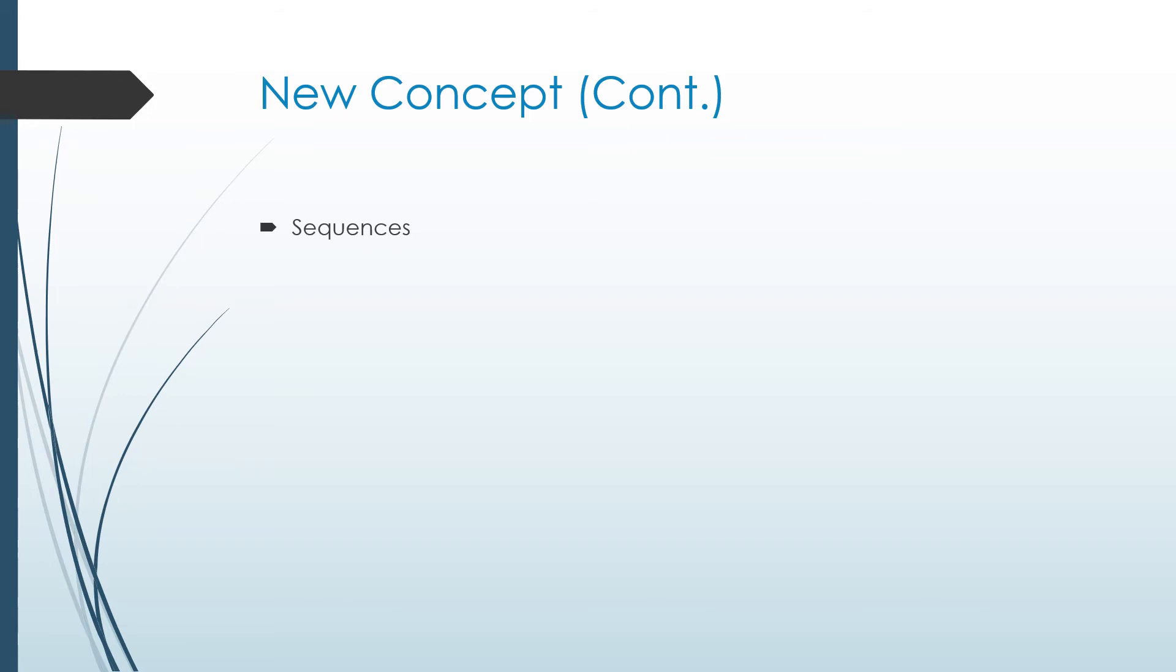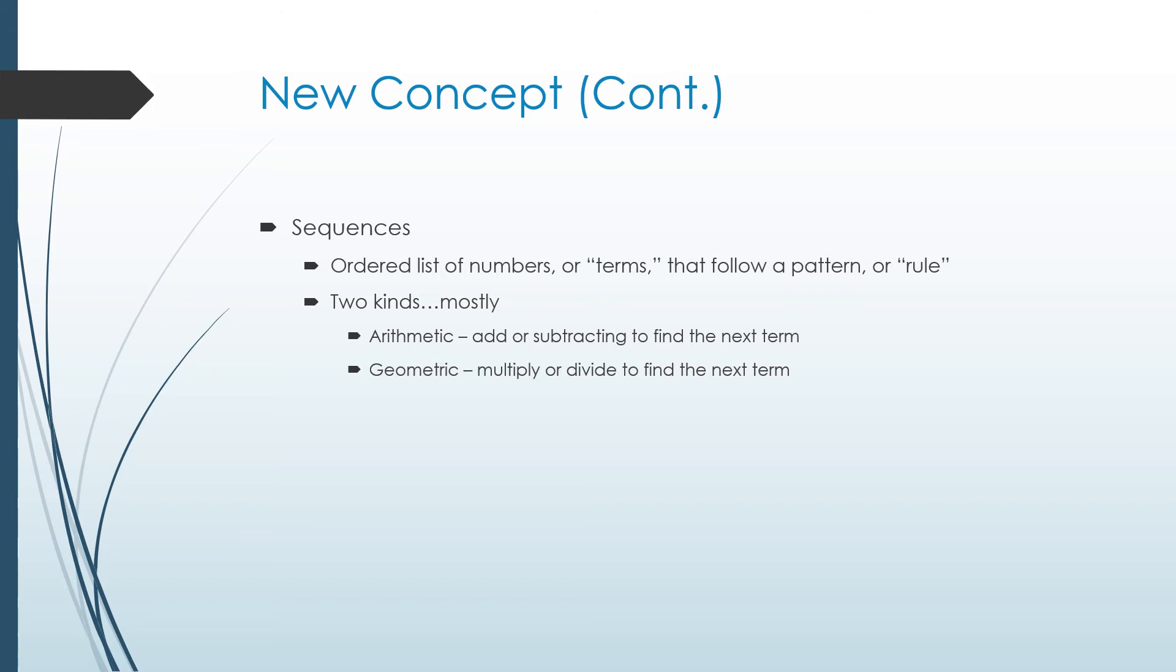Last thing we're going to talk about is sequences. You've been doing these for a while. It's a counting pattern. We call each number in the sequence a term. And the pattern is called a rule. And there's usually two kinds of sequences. There's a third kind that really only has one sequence in it that you have to remember. But the two are arithmetic sequences. So that's when we're adding or subtracting to find the next term. And there's geometric sequences where we're multiplying or dividing to find the next term. The third kind of sequence that isn't one of those two is the sequence of perfect squares. That's neither arithmetic nor geometric. It's kind of on its own.